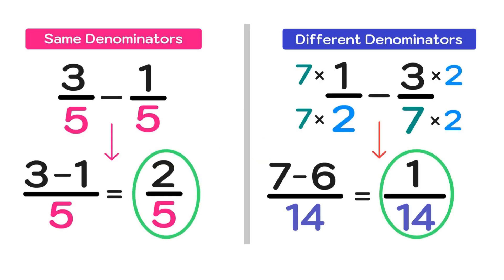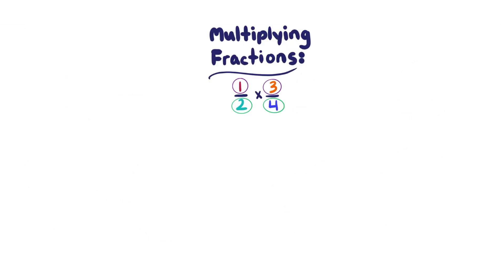Subtracting fractions is similar, but involves taking the difference of the numerators instead. The product of two fractions is the product of the numerators over the product of the denominators.